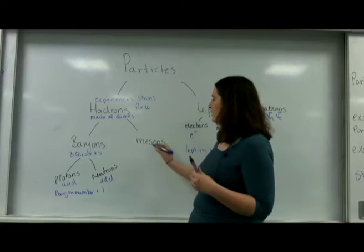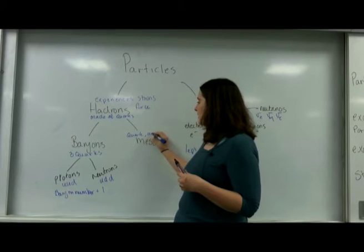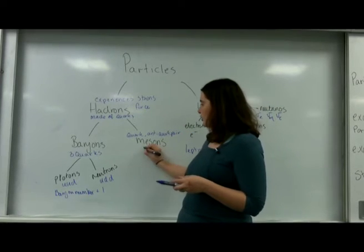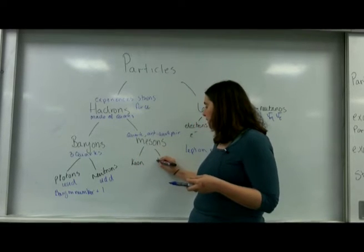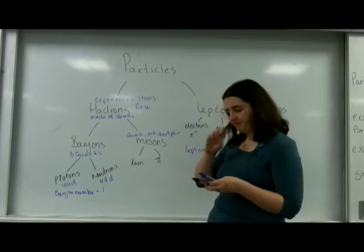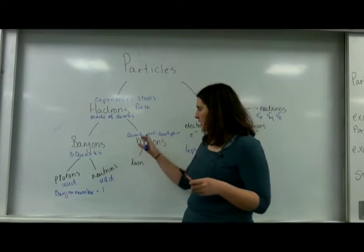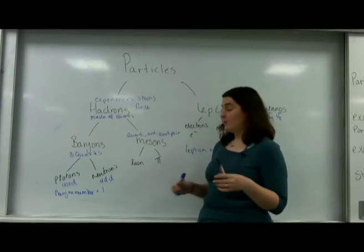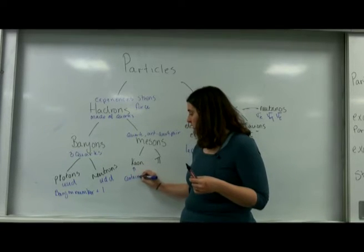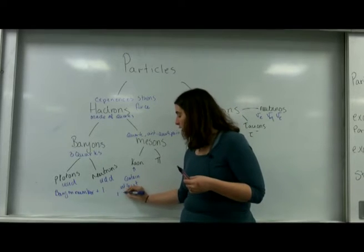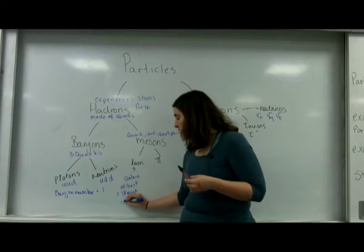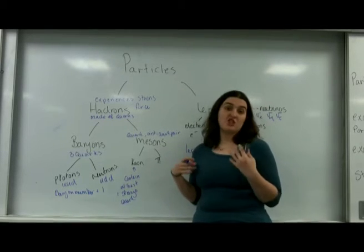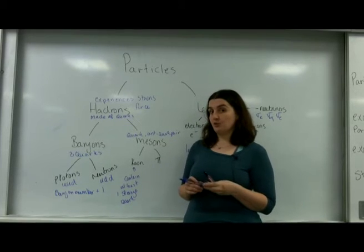Mesons are quite special — they are a quark-anti-quark pair. They include two special ones you need to know: a kaon and a pion, and we use the letter pi for pions. The thing you need to know about kaons is they contain at least one strange quark. You can make up kaons and pions based on their charge using quark data, and we'll talk more about that in another video.